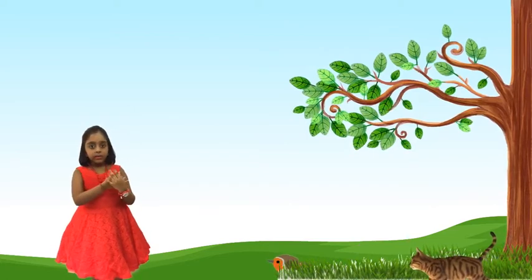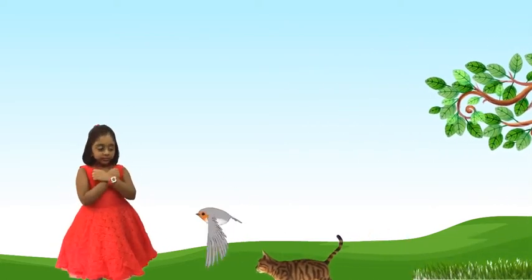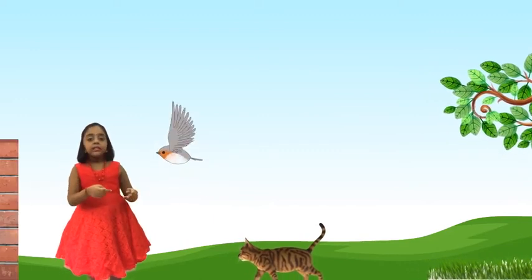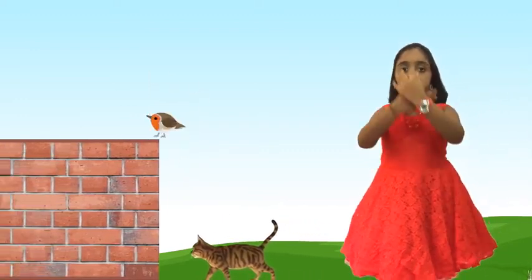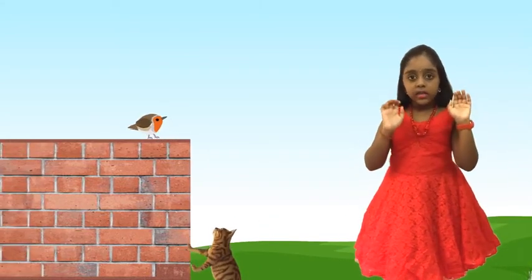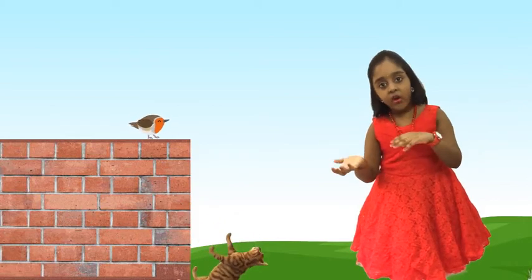Says Little Robin Redbreast, catch me if you can, catch me if you can. Little Robin Redbreast jumped up on a wall and Pussycat jumped after him and almost got a fall.